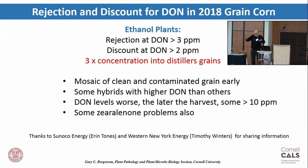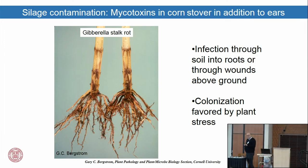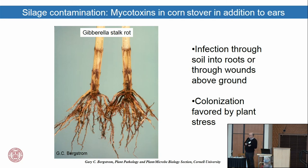For silage producers: a lot of people are surprised that they didn't see mold in their corn, yet they got DON results back on their silage. In the case of silage, it's Fusarium infection not only in the ears but also in the stalks. Fusarium Gibberella stalk rot can result in DON loading coming from that component of the silage as well as from the ears.